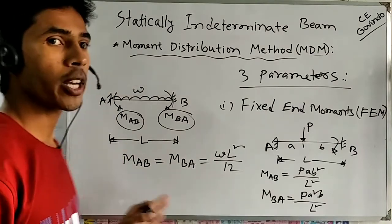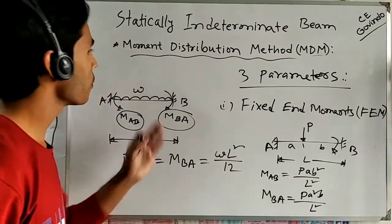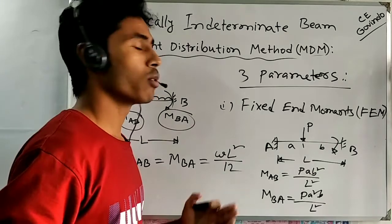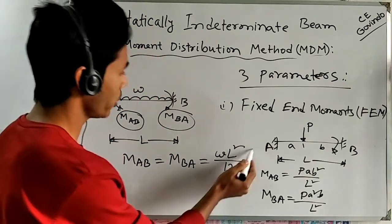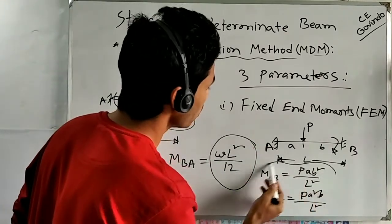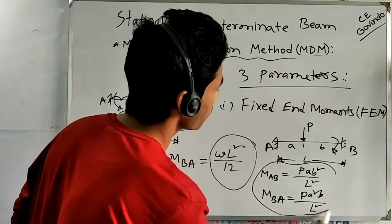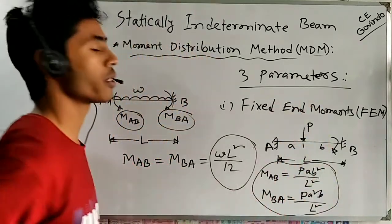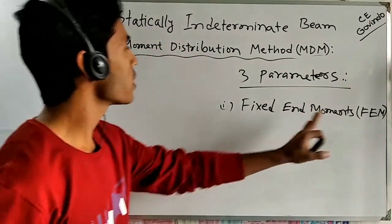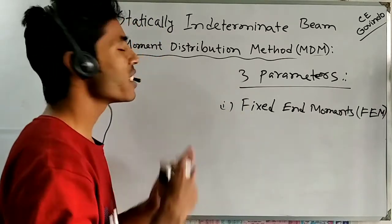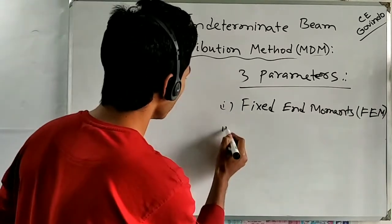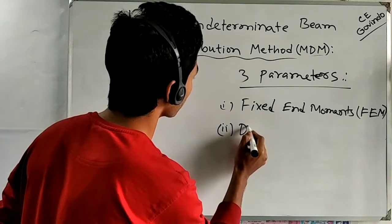We may have other loading patterns and for those patterns we can find Fixed End Moment formulas. We will just use those formulas to find Fixed End Moments. After finding the Fixed End Moments, we need to distribute these moments — that's why we need the Distribution Factor.